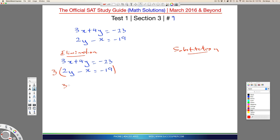So, essentially, this top is going to still be 3x plus 4y equal to minus 23. That's the top. It hasn't changed.